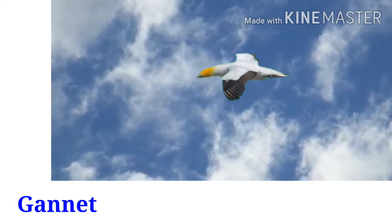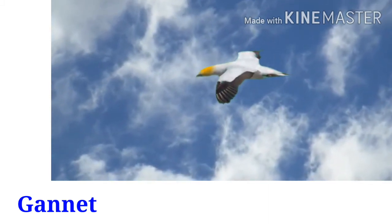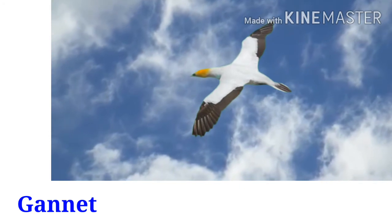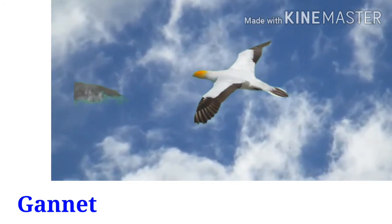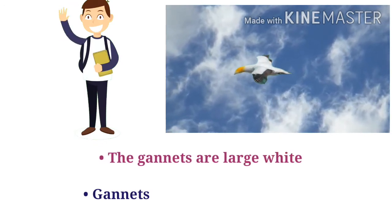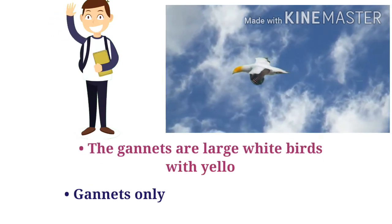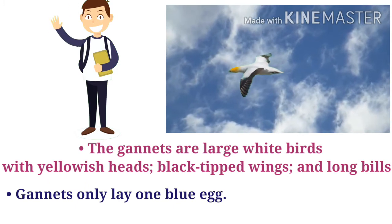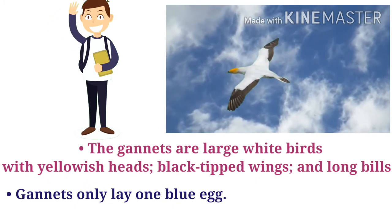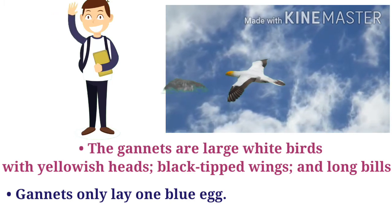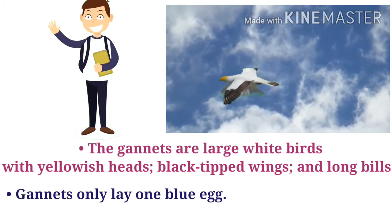Do you know this bird? This is a gannet. G-A-N-N-E-T. Let's introduce gannets. Gannets are large white birds with yellowish heads, black-tipped wings, and long bills. Gannets only lay one blue egg.